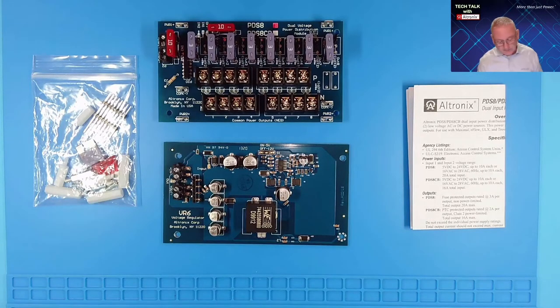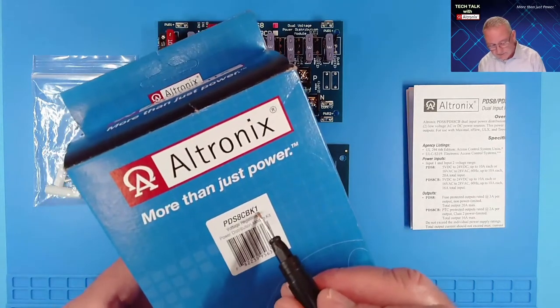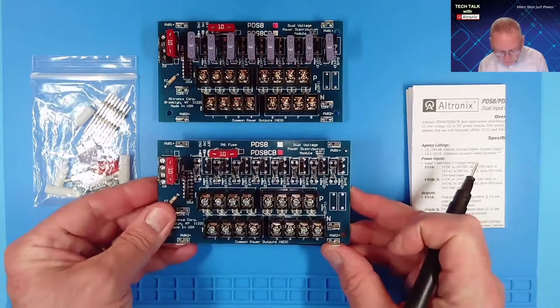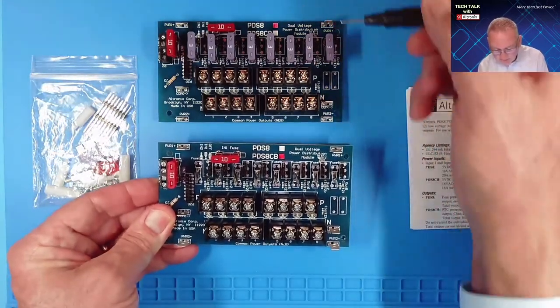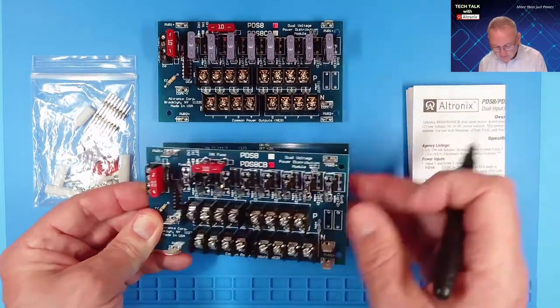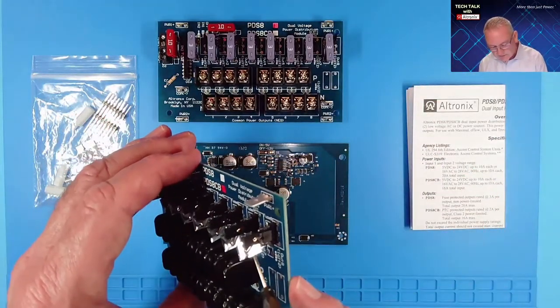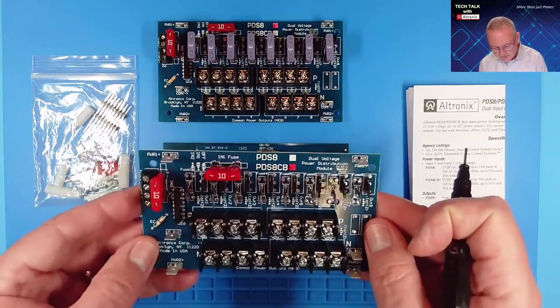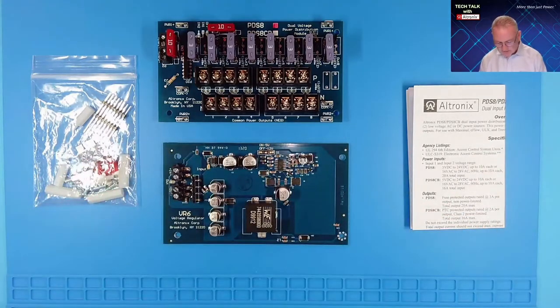Now this kit is also available in the PDS-8 CBK1. CB stands for circuit breaker. If we compare the two distribution boards, the PDS-8 has a 3-amp ATO fuse and the PDS-8 CB has a 2-amp PTC circuit breaker which is a power limited class 2 device. Other than that, the two boards are identical.